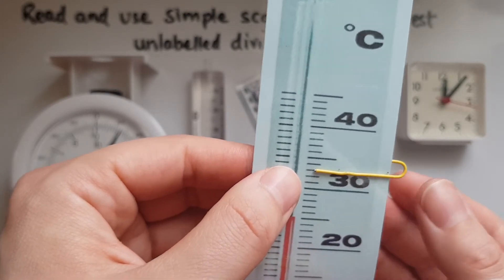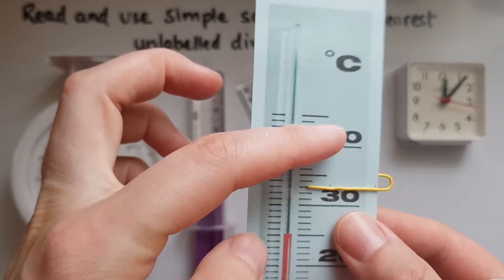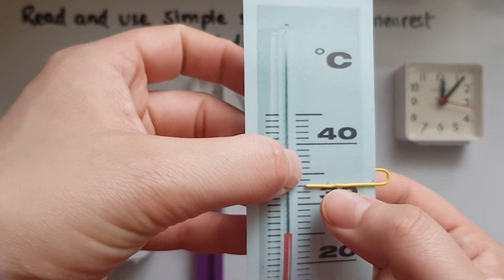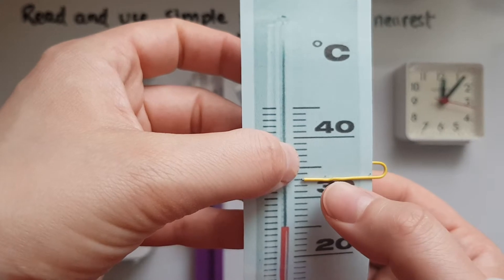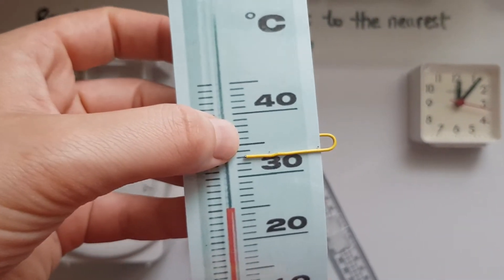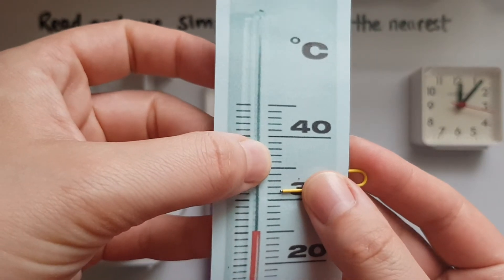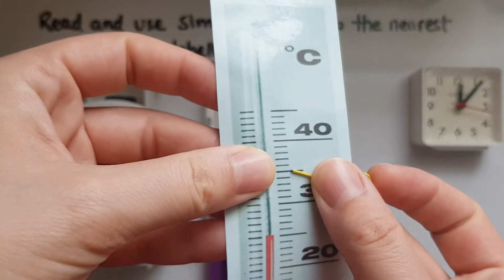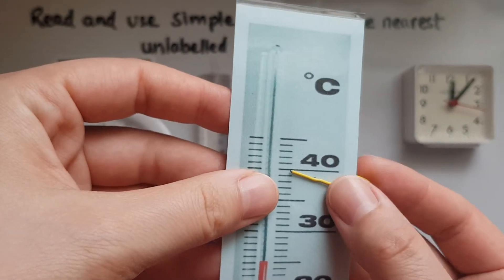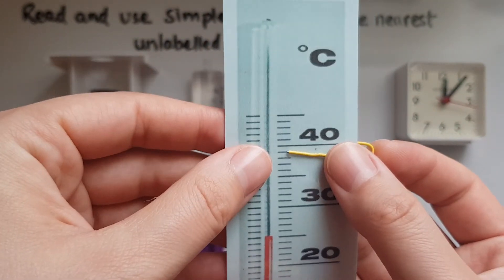Another way to find out is between 30 and 40 is 35. So we've got 5 small divisions and that must represent each 1 degree. So we'd go 31, 2, 3, 4, 5, 6, 7, 8, 9 and then 10, which makes 40 there.